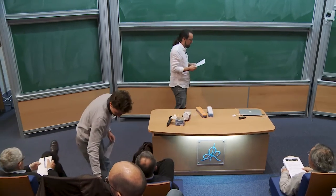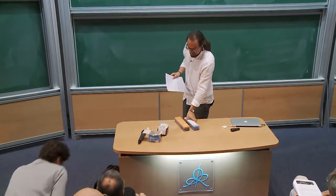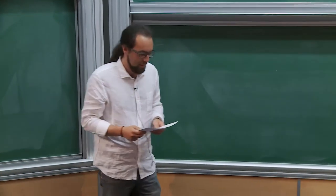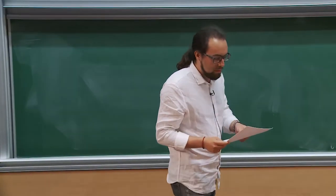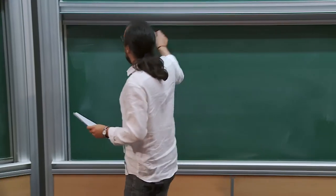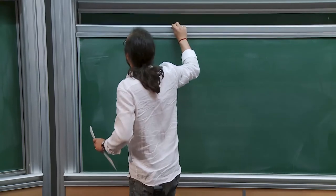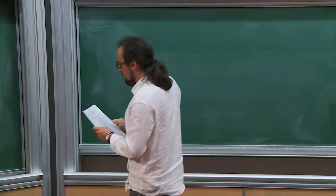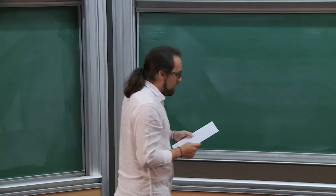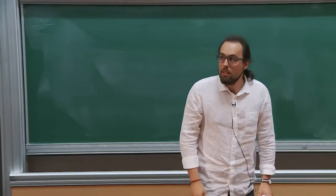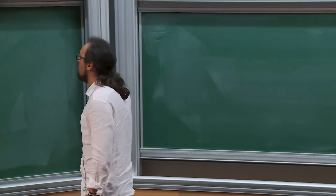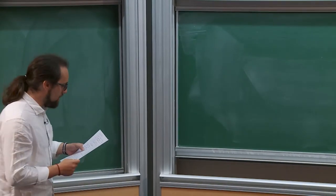Thank you very much for the invitation to speak here and the opportunity to present my work, and also to speak in front of Mazaki Kashiwara, whose work has influenced many of my current research. In this talk, my goal is to explain how classical results concerning representation of Lie algebras, if they are adapted in a suitable categorical framework, can be helpful to understand classical results of algebraic geometry.